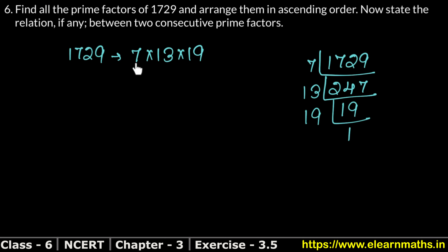Now he asks whether the consecutive prime factors have any relation. Looking at 7, 13, and 19: the difference between 7 and 13 is 6, and the difference between 13 and 19 is also 6. So every consecutive factor differs by 6.